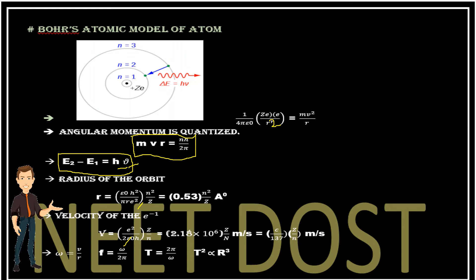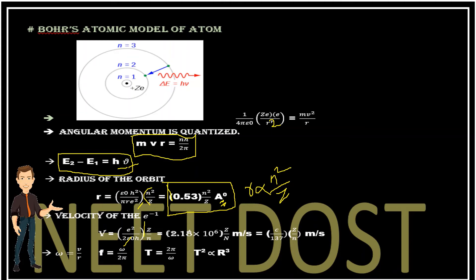Don't get confused or panic with different formulas. Make a mnemonic: r is proportional to n²/z, and v is proportional to z/n. Simply remember the formula: r = 0.53 × n²/z in Angstrom units. Units are also important here. r is directly proportional to n²/z — remember this formula and this relation.